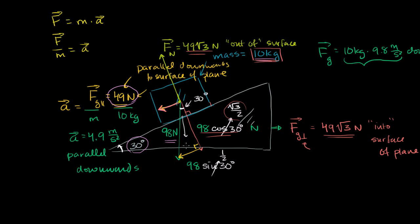The one component of the force of gravity that did not seem to have any offset — at least the way we set up the problem in the last video — is the component that is parallel to the surface of the plane. We figured that out to be 49 newtons: essentially the weight of the block times the sine of the angle. If there are no other forces, the block would be accelerated in that direction. The rate of acceleration is the force divided by the mass, giving 4.9 meters per second squared.